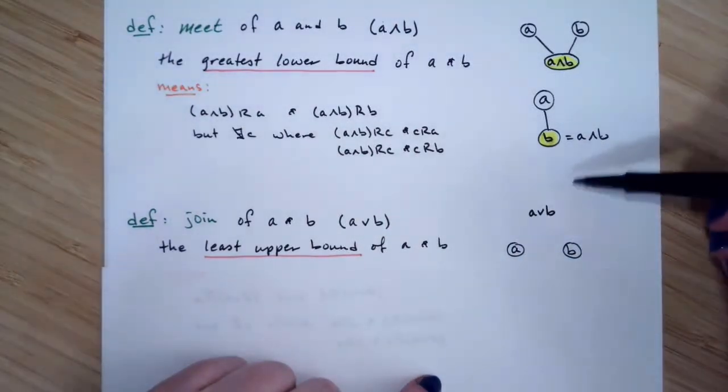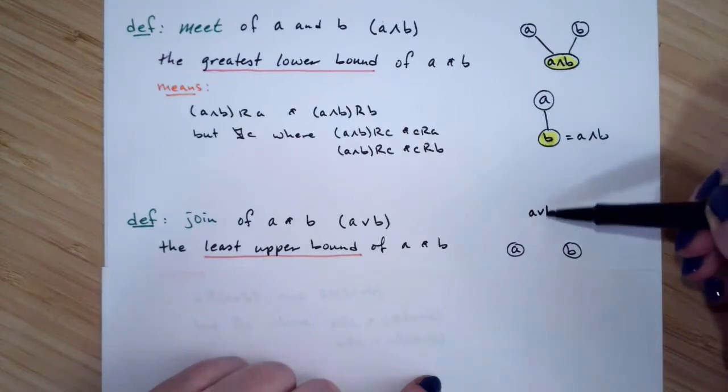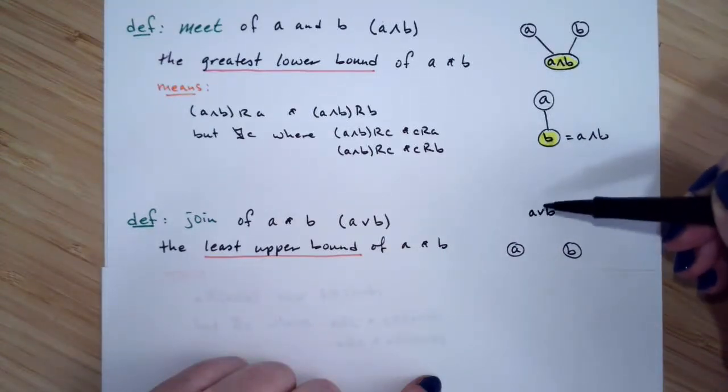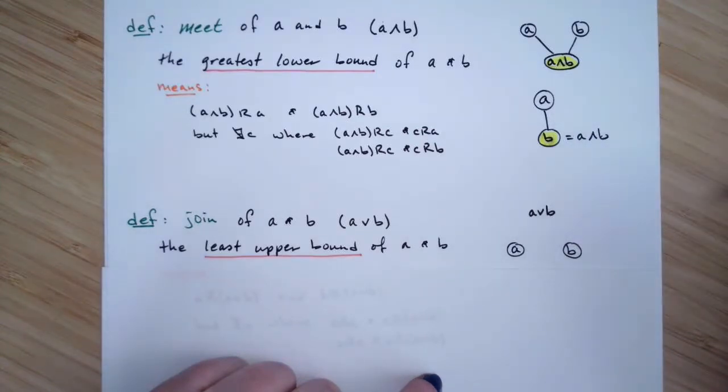Notice symbolically in the picture, both the meet and the join, the little guy that looks like either a carrot or a V, if you put an arrowhead on there, it's pointing towards where A and B actually live, if that helps.